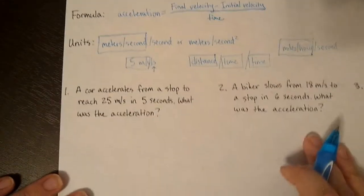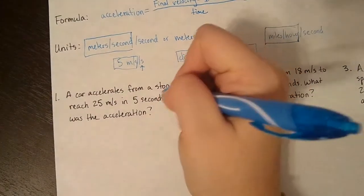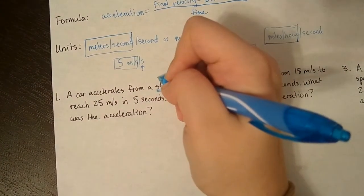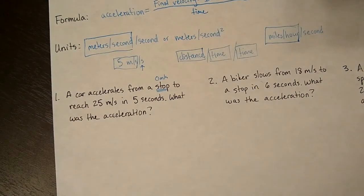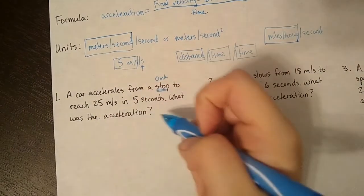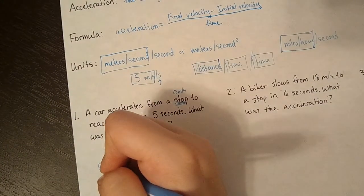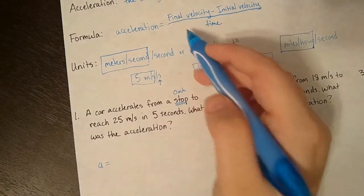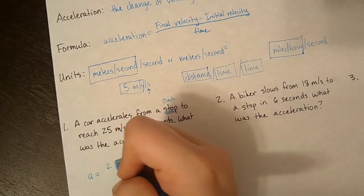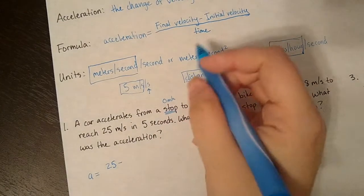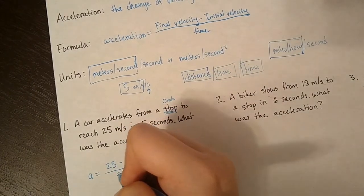All right, let's dive into the math. A car accelerates from a stop. So starting at a stop, I'm going to go zero, right? A stop is zero meters per second. To reach 25 meters per second in five seconds, what was the acceleration? So A equals, I'm going to take our final velocity, which was 25 meters per second, subtract our initial velocity, which was zero, in five seconds.